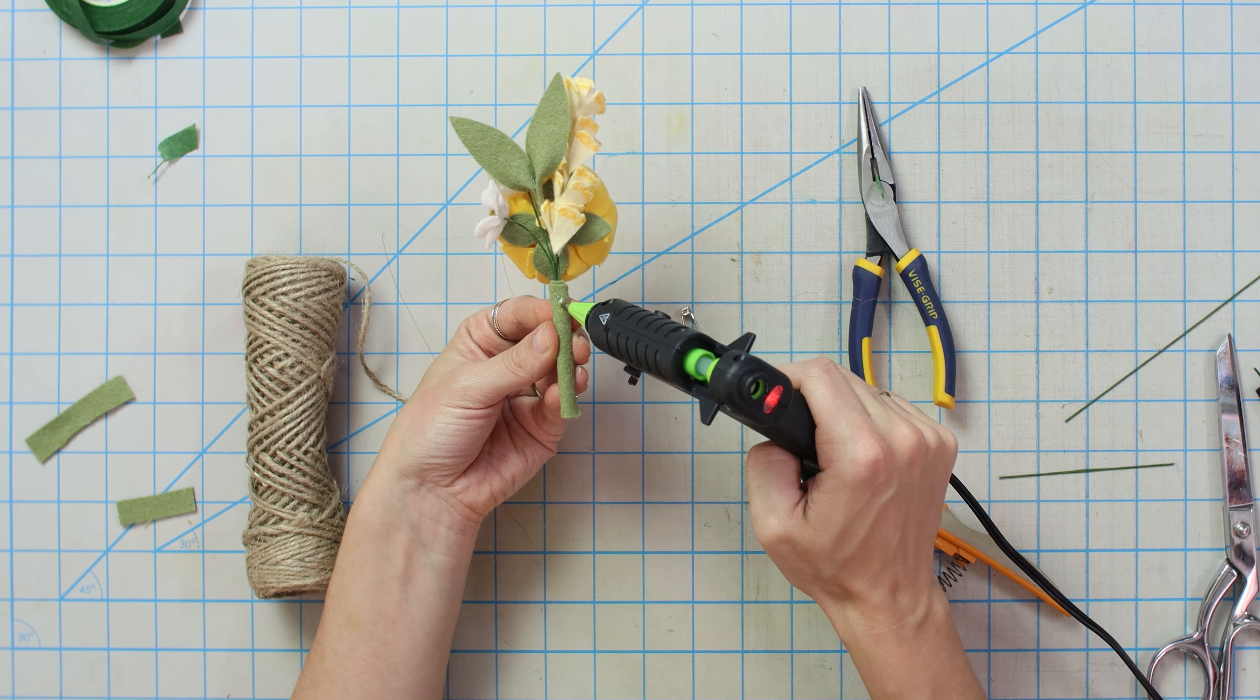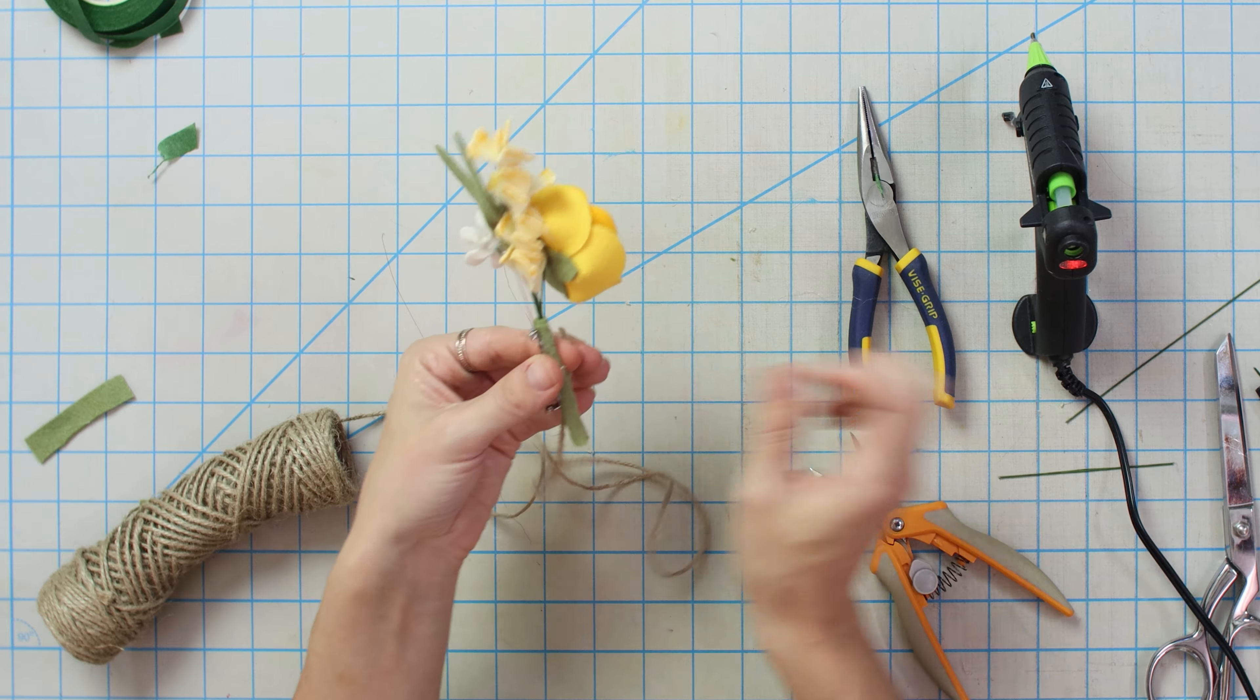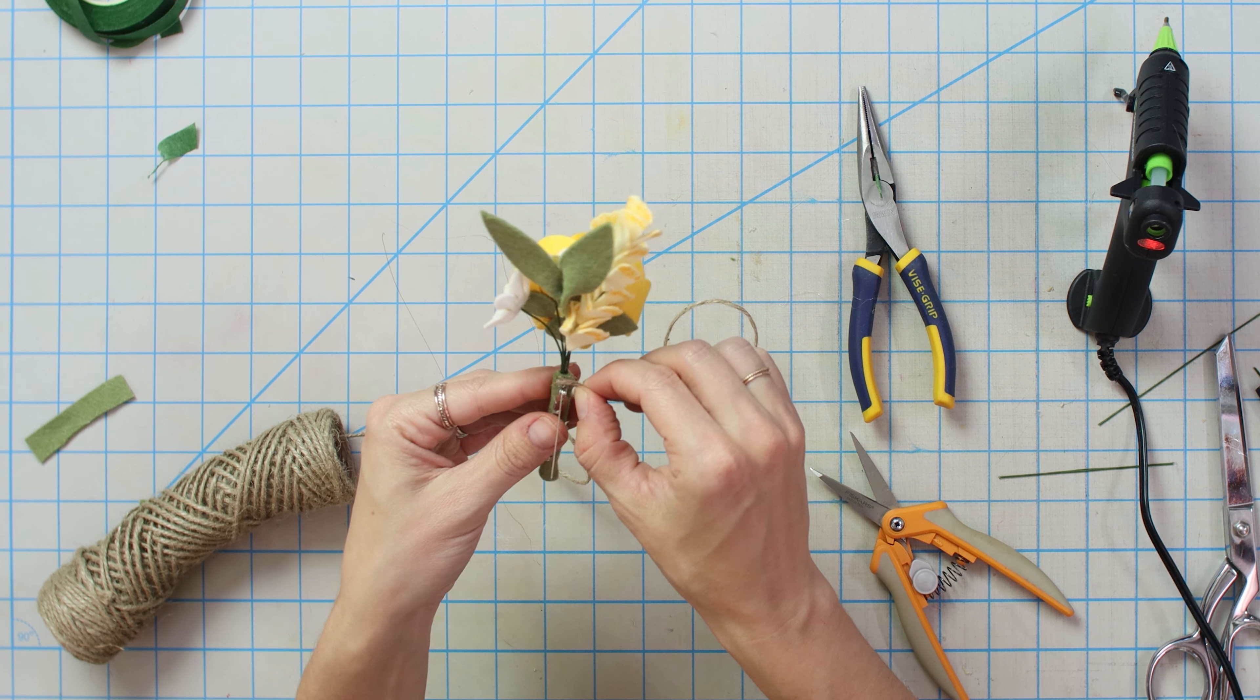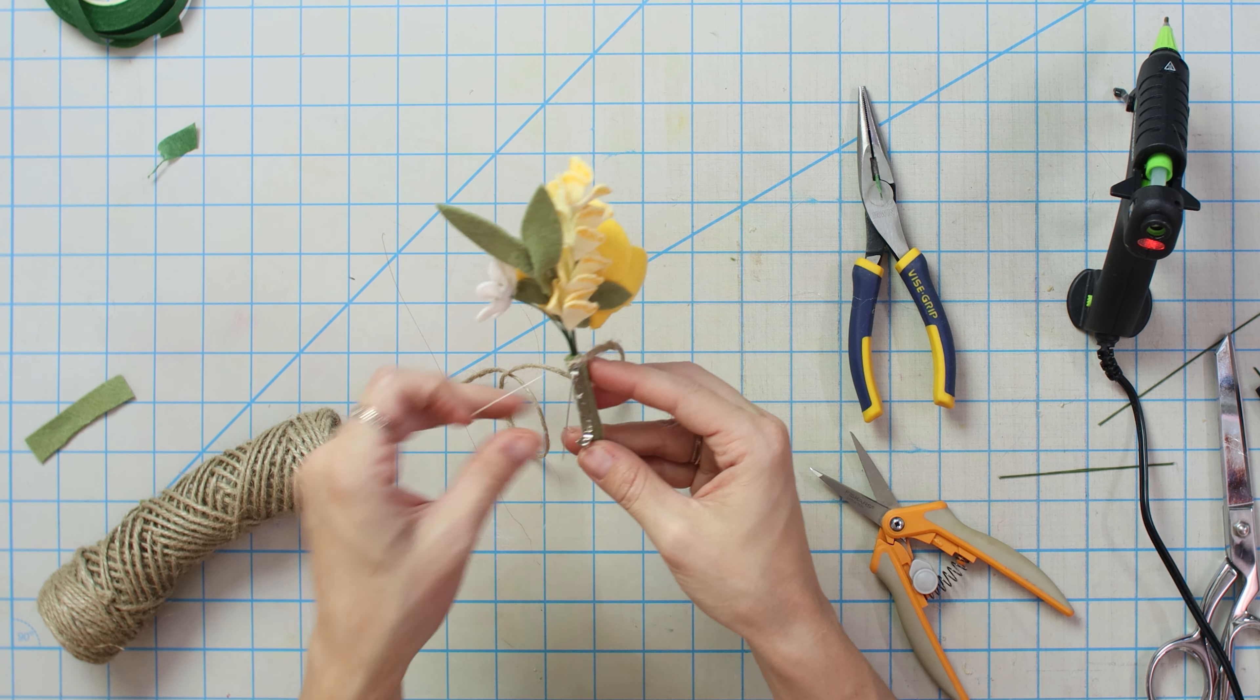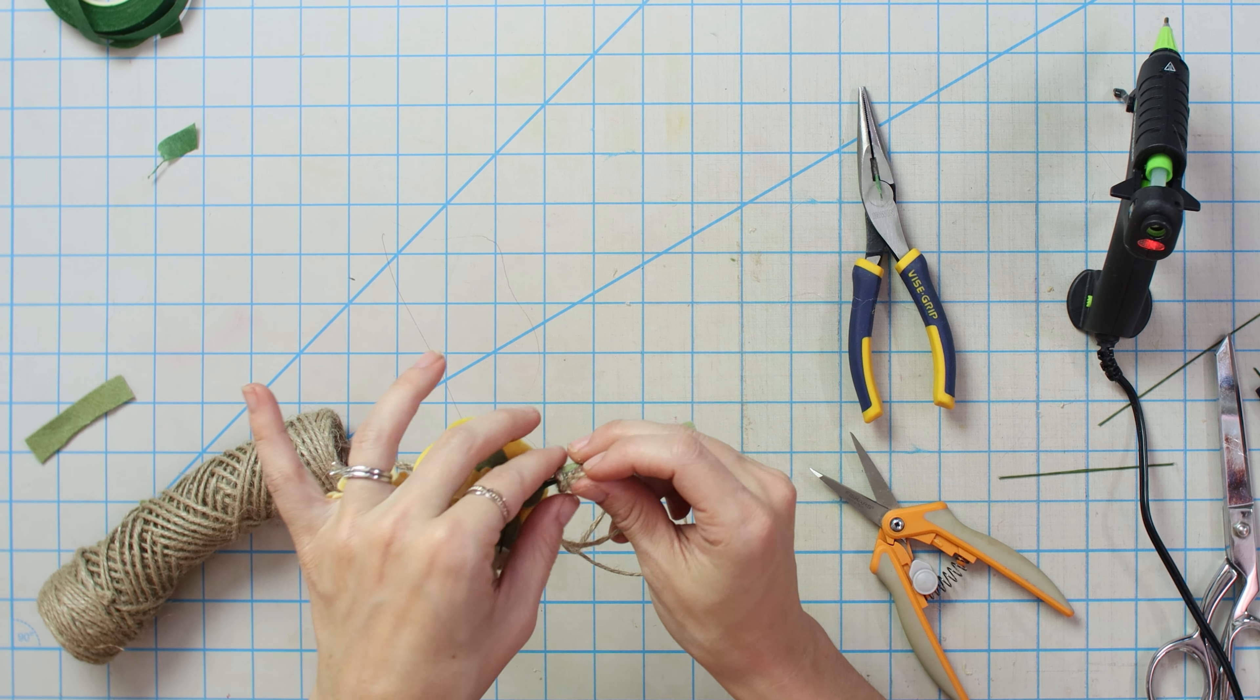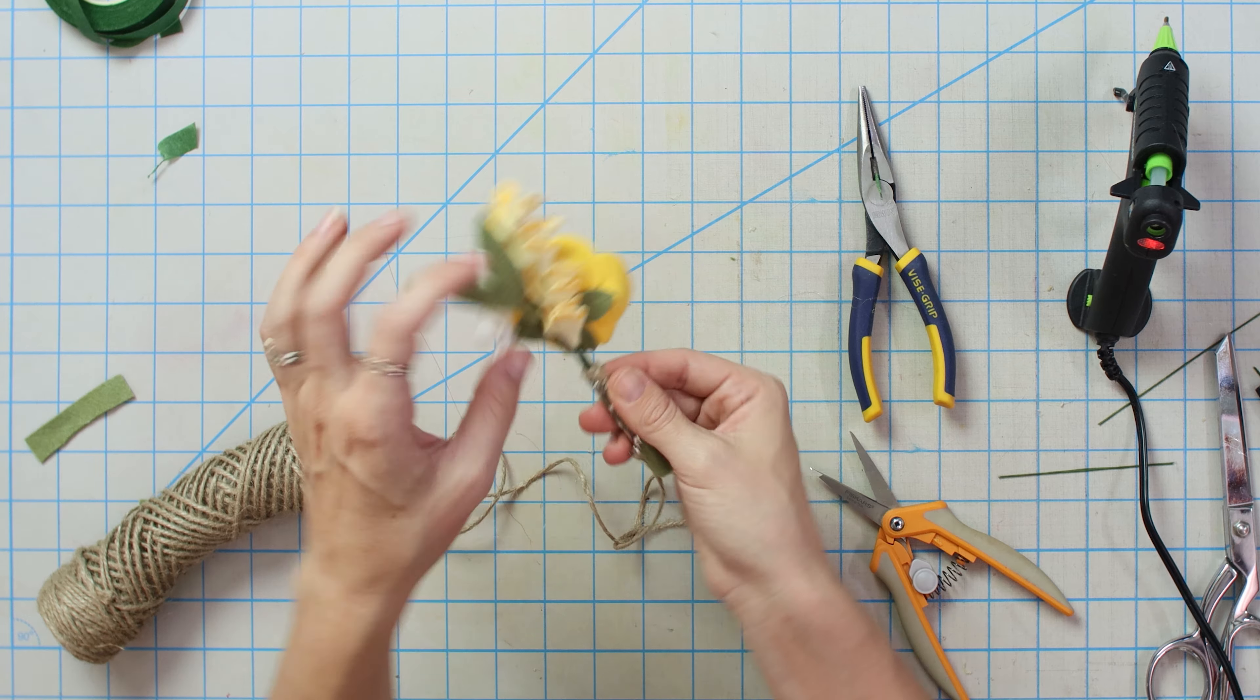So the way I do these is before I wrap it with the either, whatever you're gonna wrap it, twine, ribbon, whatever, I like to affix this. So I'm gonna go ahead and glue this on the back. And now we're gonna start wrapping. I'm gonna take our twine. I'm gonna put a little bit of glue. Well actually I need to close this first. We're gonna put a little glue here at the top. Let this twine set. I'm gonna let my glue set and cool just a little bit because I'm gonna put my finger on it.